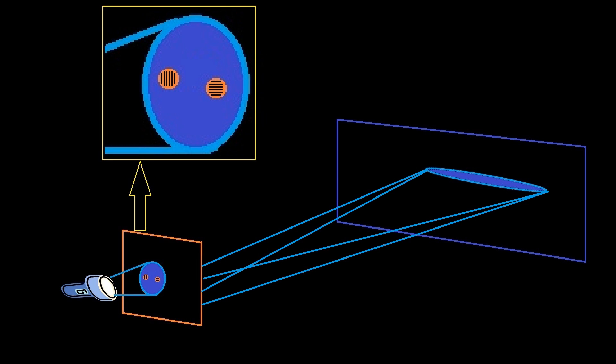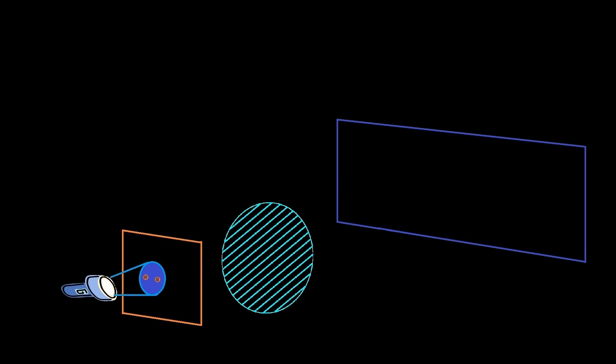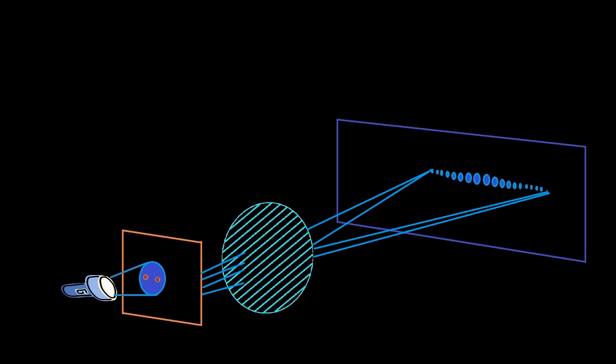Let's see how to erase the which-path information and turn it back into a wave pattern after the observation. Set the 45-degree polarized filter after the slit. It will absorb 50% of photons and allow 50% photons to pass into the 45-degree polarization. Since all photons now have the same polarization, these don't have the which-path information, which was erased by the 45-degree polarization filter. As it is now in an unobserved state, the wave pattern comes back.